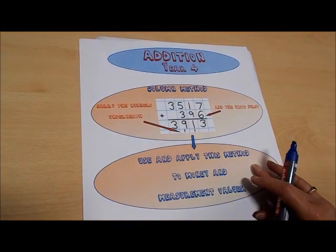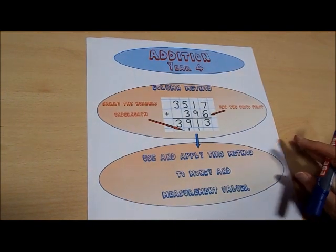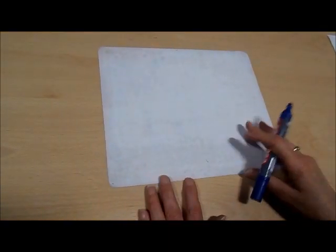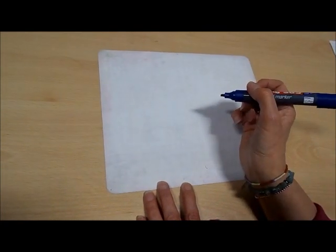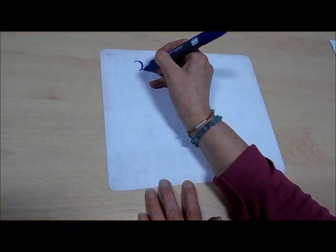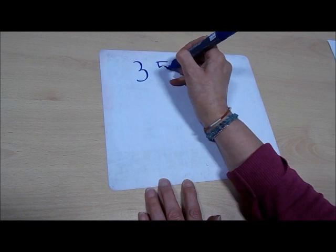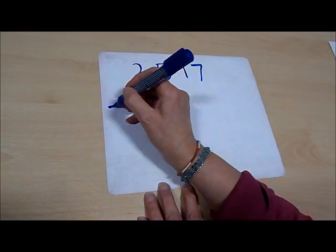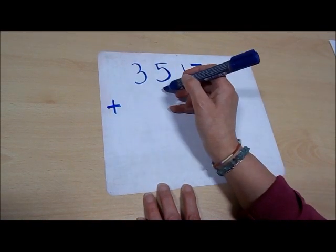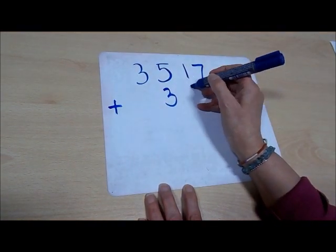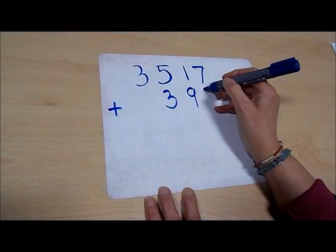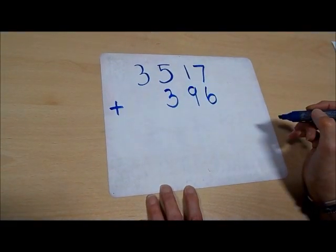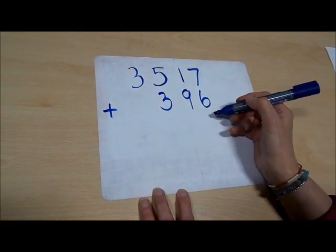Addition in year four. In year four we do addition by the column method. I'm going to write down our calculation which is 3517, and we're going to add 396. We have to make sure that our numbers are kept in the columns.